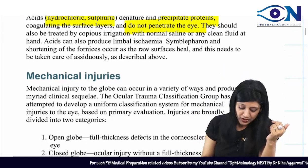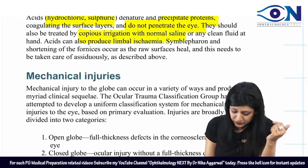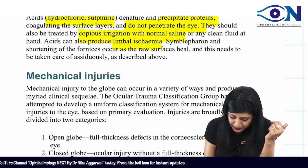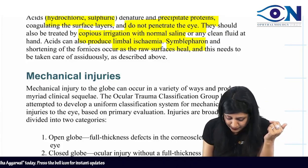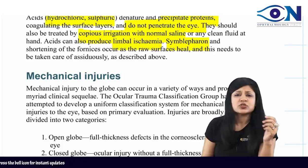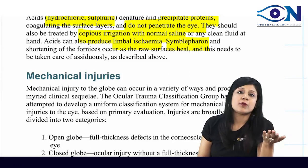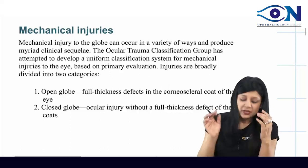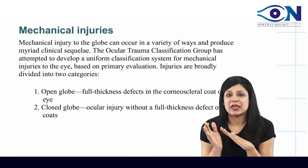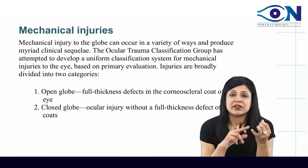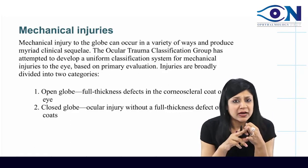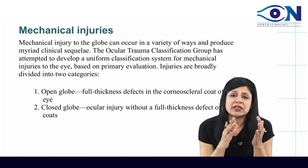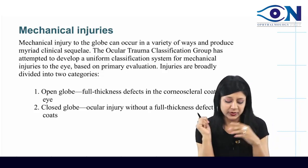Acid injuries are treated by copious irrigation with normal saline. They also produce limbal ischemia and symblephron, but in a milder form than alkali burns. The treatment profile remains the same: irrigation, removal of particles, debridement, and the same medications.